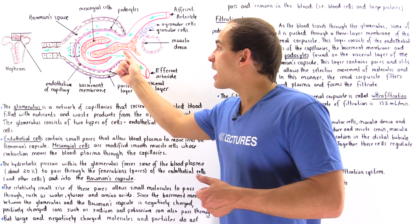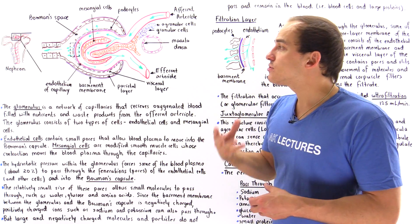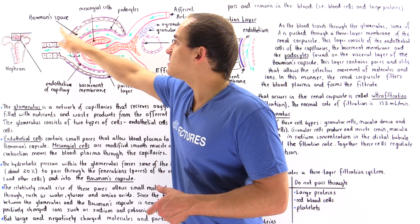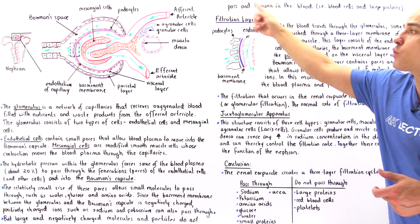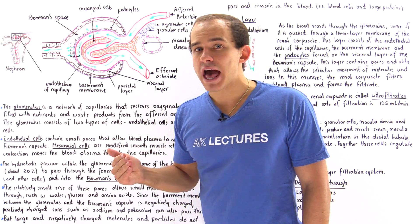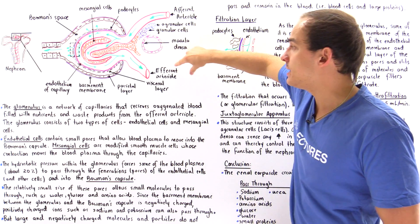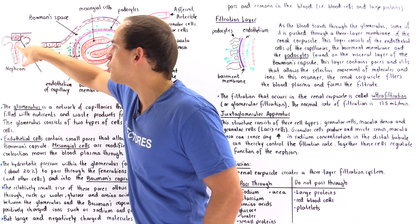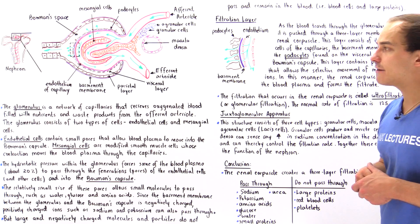The blood that travels through the glomerulus is basically filtered. About 20% of that blood enters the space of the Bowman's capsule through a region known as our filtration layer. The rest of that blood — about 80% — is carried via the efferent arteriole to the vasa recta, the second capillary system of our nephron.